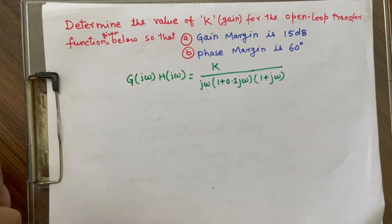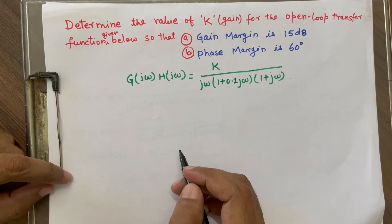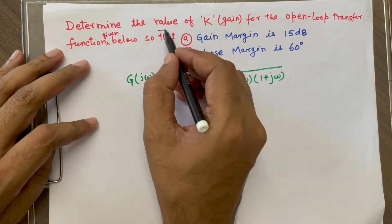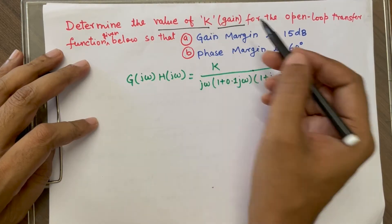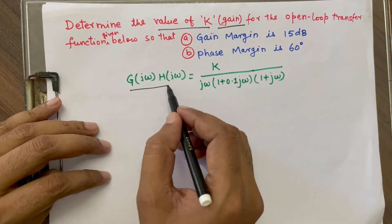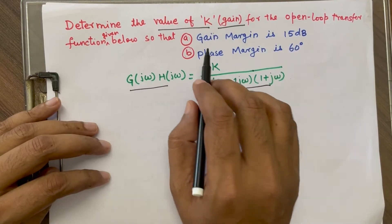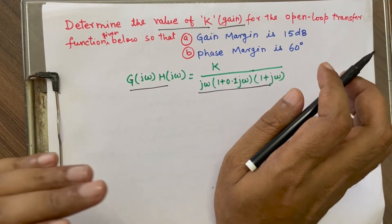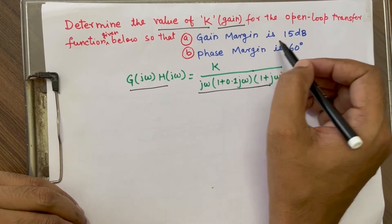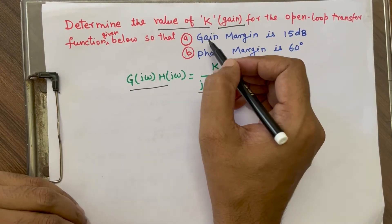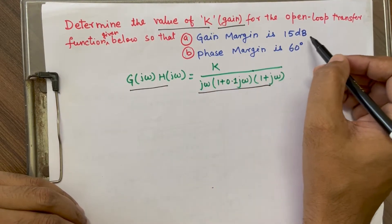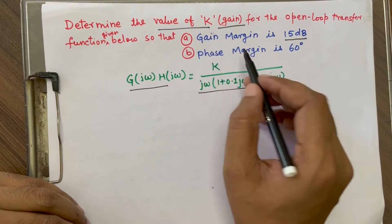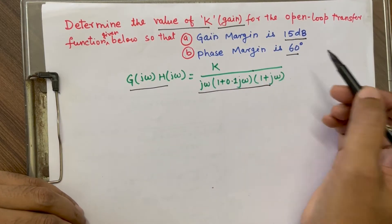Hello friends, welcome to our YouTube channel RF Design Basics. In this video, we are going to find out the value of K, which is gain, for a given open loop transfer function where there is a fixed gain margin or fixed phase margin. For example, in the first case, we need to know what is the value of K for a given gain margin of 15 dB, and in the second case, what will be the value of K if the given phase margin is 60 degrees.